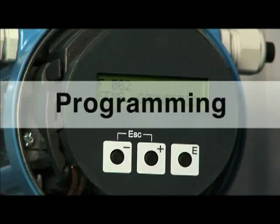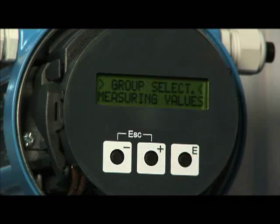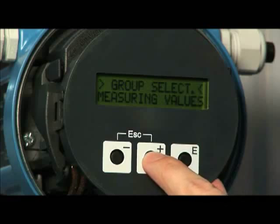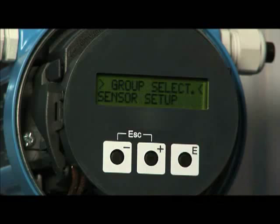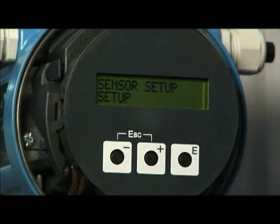Begin the programming of the Prosonic flow meter by pushing the E button. This button is used to initiate the programming sequence and later for confirming selections. The plus and minus buttons are used to access the various selection options.